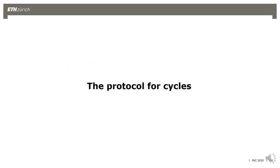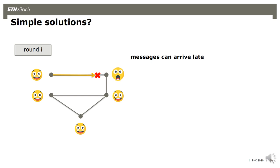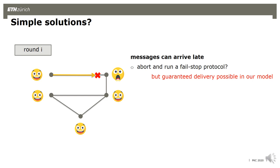Now let's go to the protocol for cycles. I want to explain why some simple solutions for transforming any synchronous protocol into this setting don't work. Imagine we have some protocol, and in round i, a party is supposed to receive message M_i but it doesn't. Messages arrive late in our model. One solution might be to just abort — the party aborts, emulates a crash, and the other parties run a fail-stop protocol.